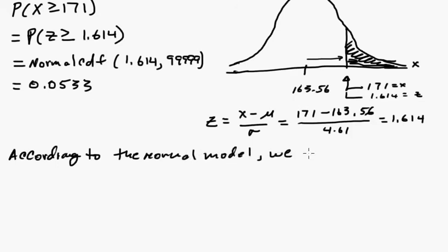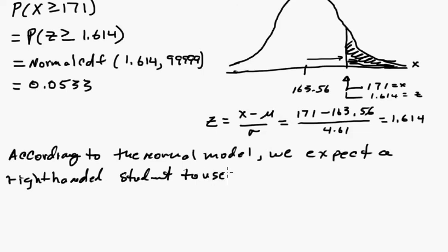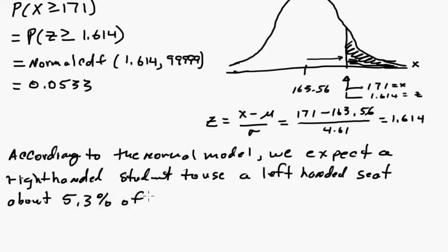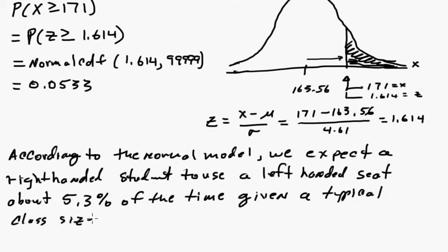According to the normal model we expect a right handed student to use a left handed seat about 5.3 percent of the time given a typical class size of 188 students.